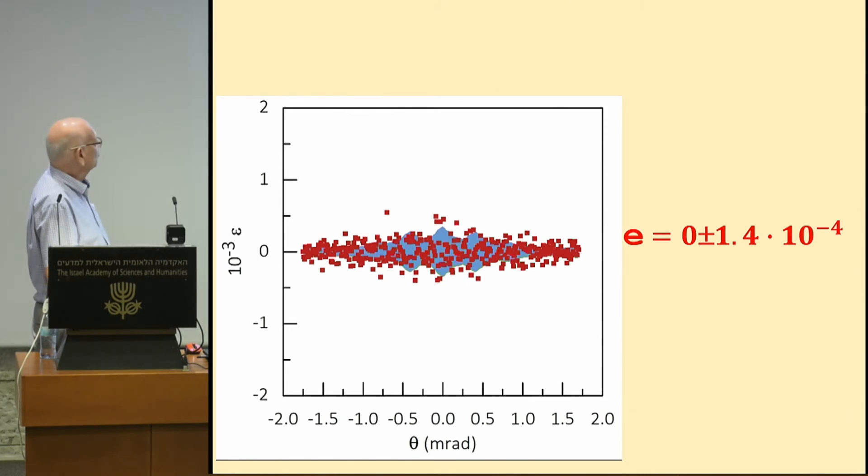This is the Sorkin parameter, and it should be zero. It's not zero. It's zero plus minus 10 to the minus four. So in this particular situation, Born was right to an accuracy of 10 to the minus four.